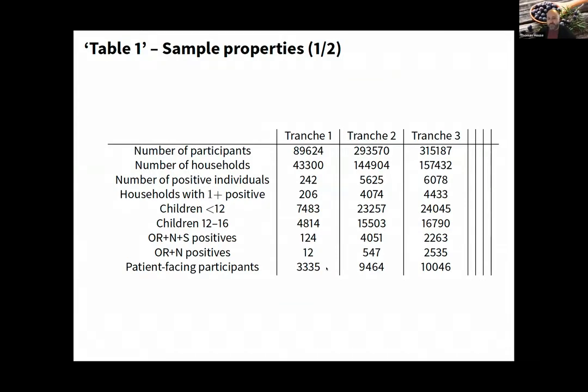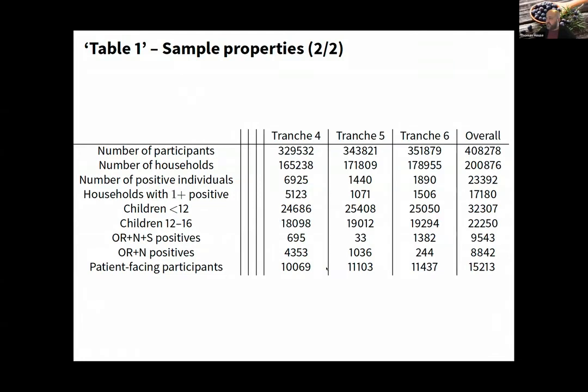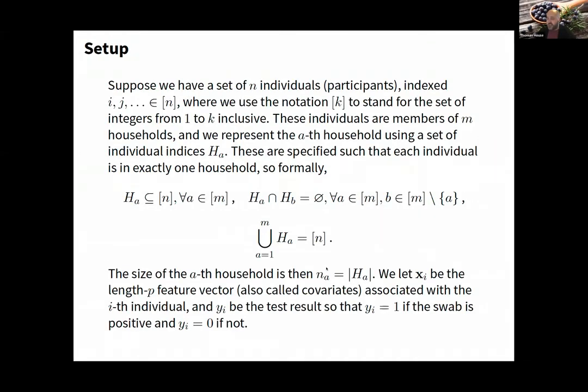Households are a unique partition of the sample. All this math is saying is each person is in exactly one household, each household contains a finite number from the sample, and households are disjoint, they don't overlap.